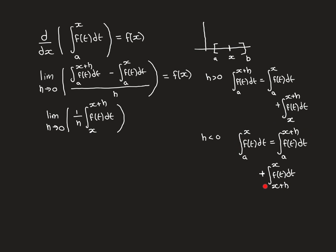We then substitute this in place of the integral from a to x, and the integral from a to x plus h cancels with the corresponding term. After performing that substitution and simplification, we're left with minus 1/h times the integral from x plus h to x of f(t) dt.